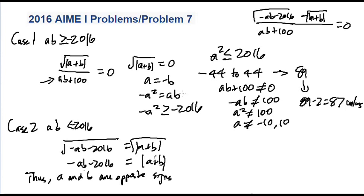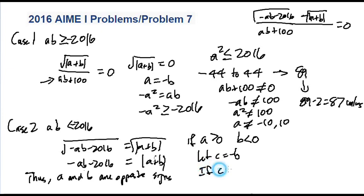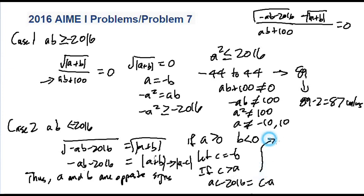So if a and b have opposite signs, let's assume a is greater than 0 and b is less than 0. Let c equal negative b to make things easier so we don't have to deal with negative signs, and we have two sub-cases again. If c is greater than a, and we substitute, that means ac minus 2016 equals c minus a. Because if c equals negative b, this absolute value sign becomes a minus c, and since c is greater than a, that becomes c minus a, so it's positive.